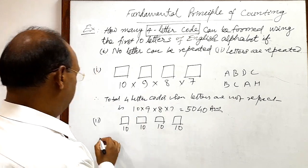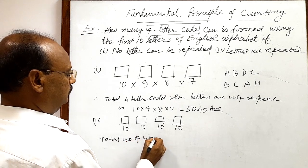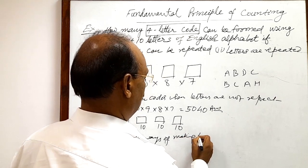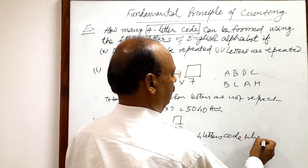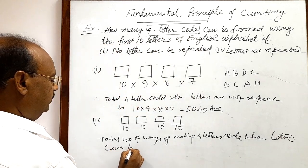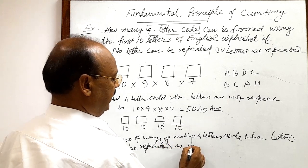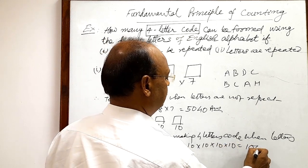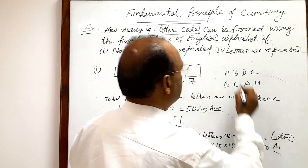Similarly, you can write that total number of ways of making 4 letter code when letters can be repeated is 10 into 10 into 10 into 10. This is equal to 10,000. This is the answer for this second part.